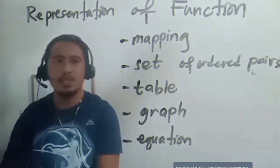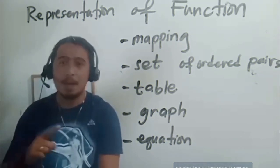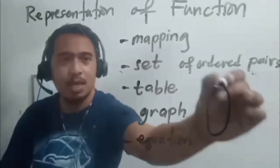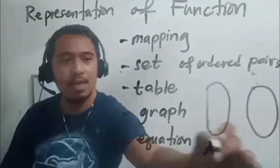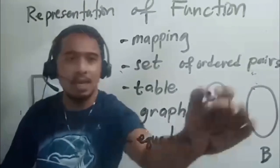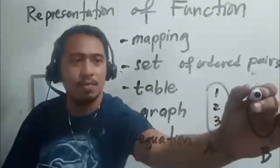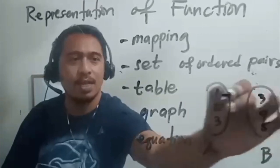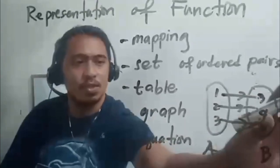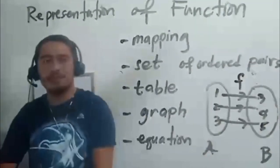Representation of function. A function can be represented in different ways. It can be represented using a mapping or mapping diagram. For example, we have diagram A and B. The elements of your domain A are 1, 2, 3, while the elements of domain B are 3, 4, 5. Here, 1 is assigned to 3, 2 is assigned to 4, and 3 is assigned to 5. So this is called the mapping diagram, and we call this function F.